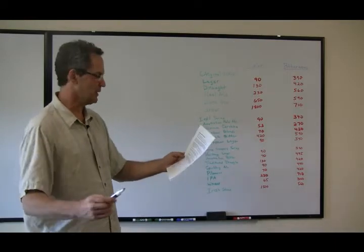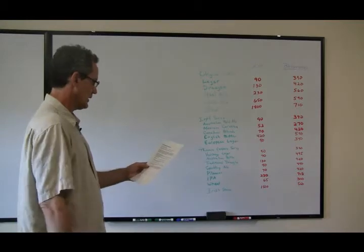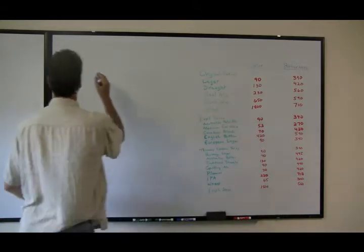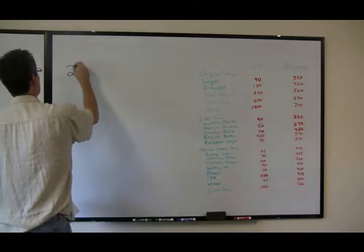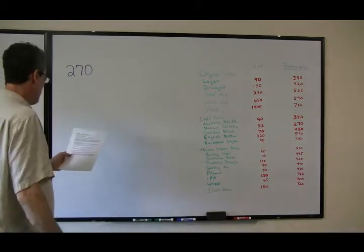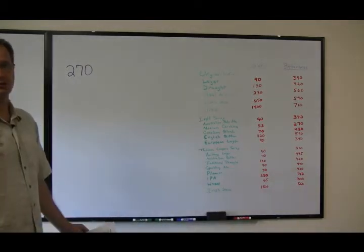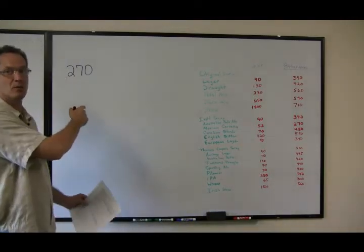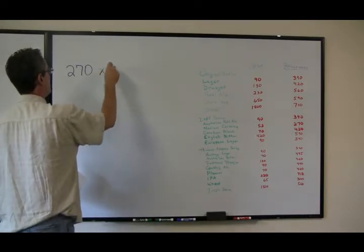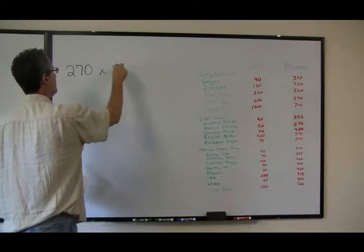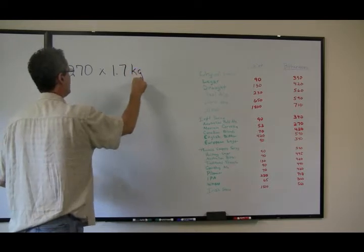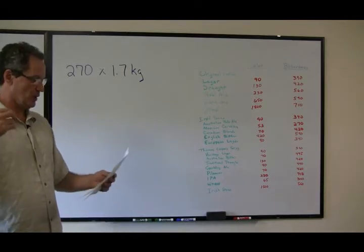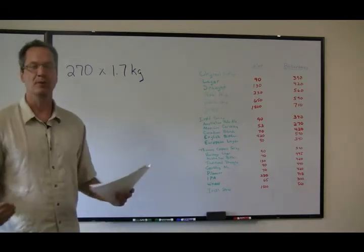The way to calculate it is to multiply the quoted bitterness, which Cooper's has at 270, by the weight of the product. Now, the Cooper's Mexican Cerveza beer kit is actually 1.7 kg, so you would multiply 270 times 1.7 kg.